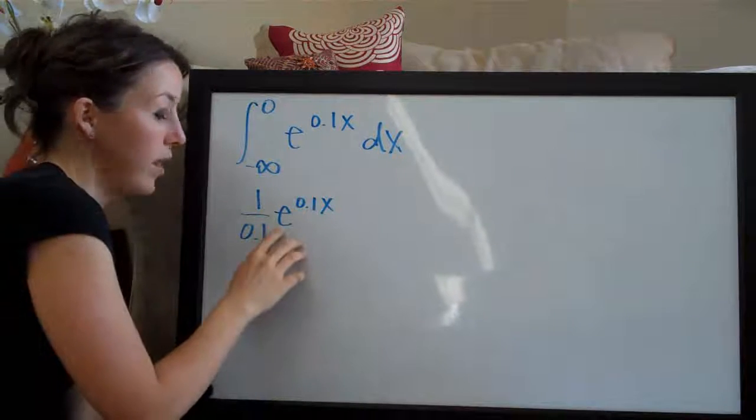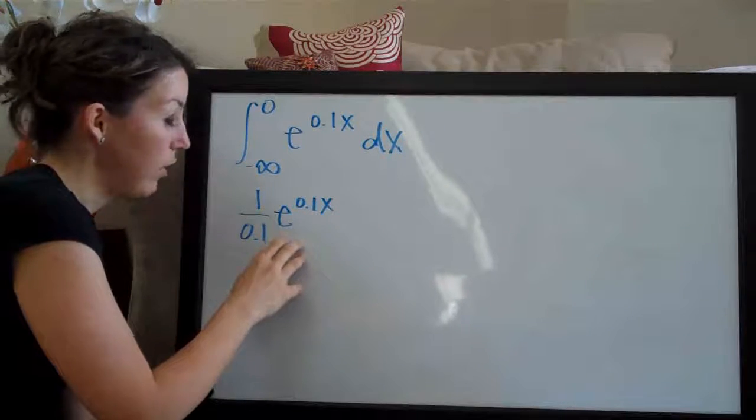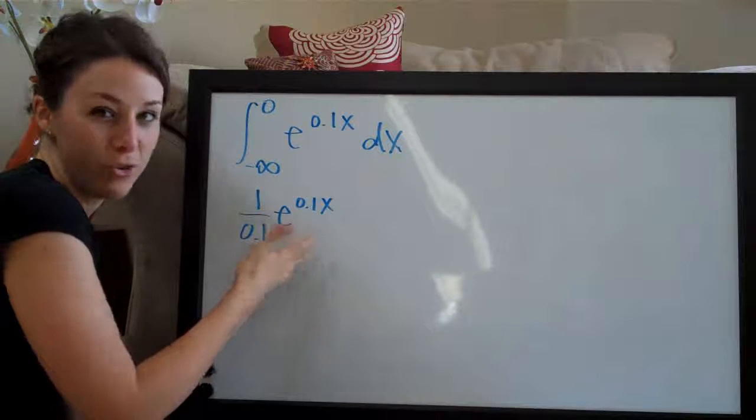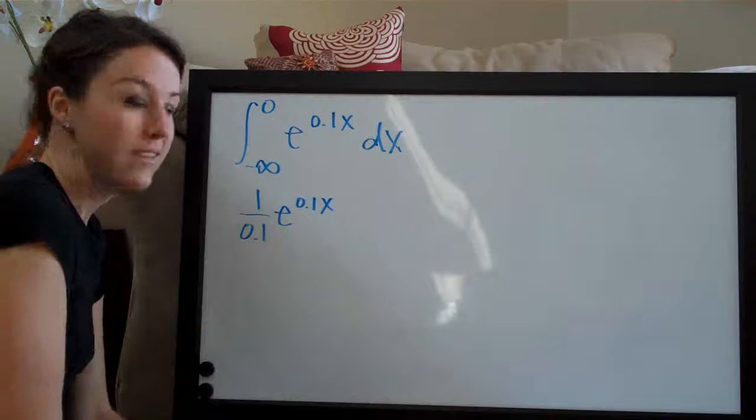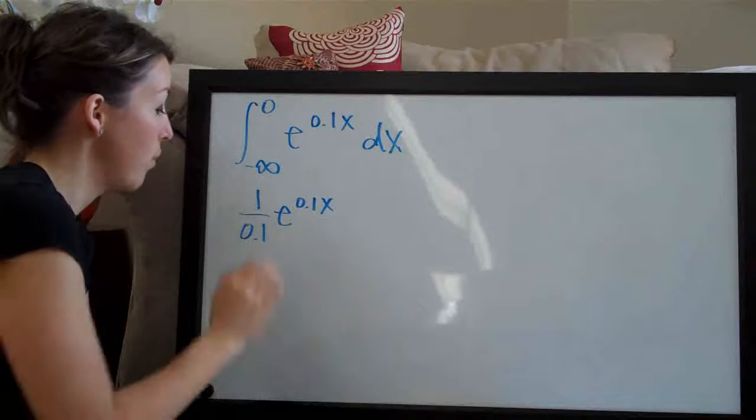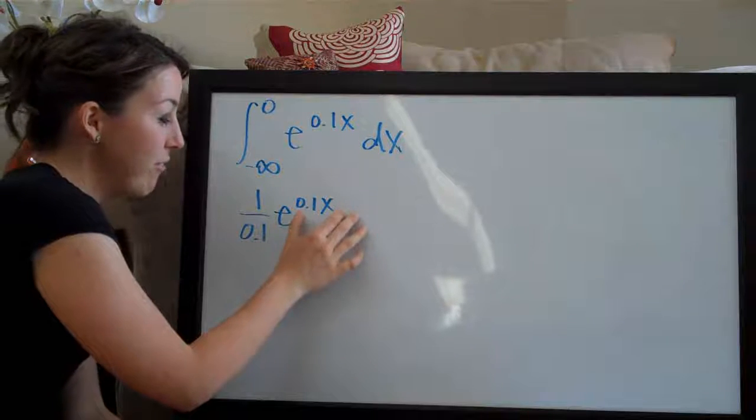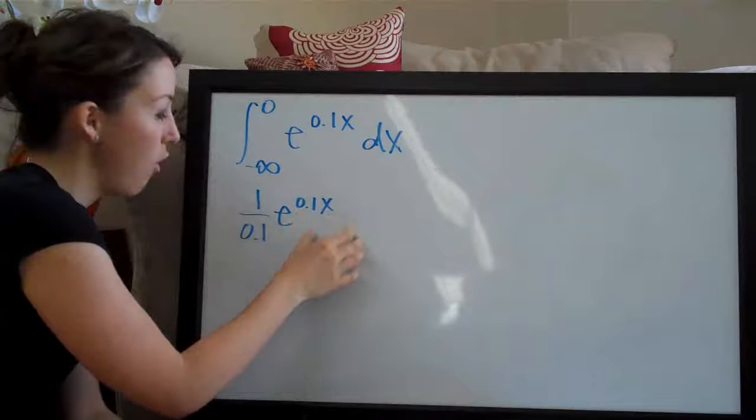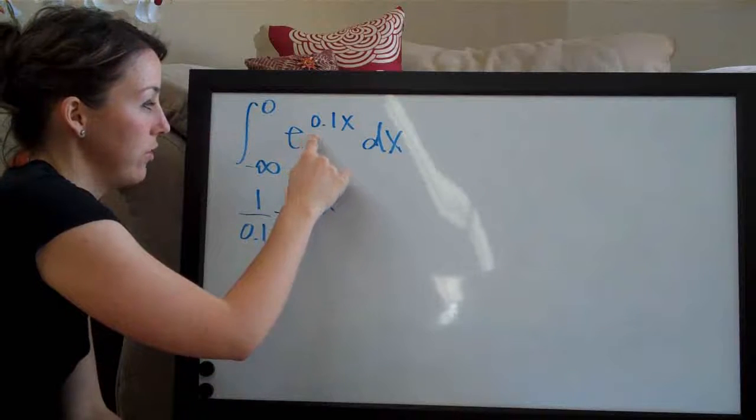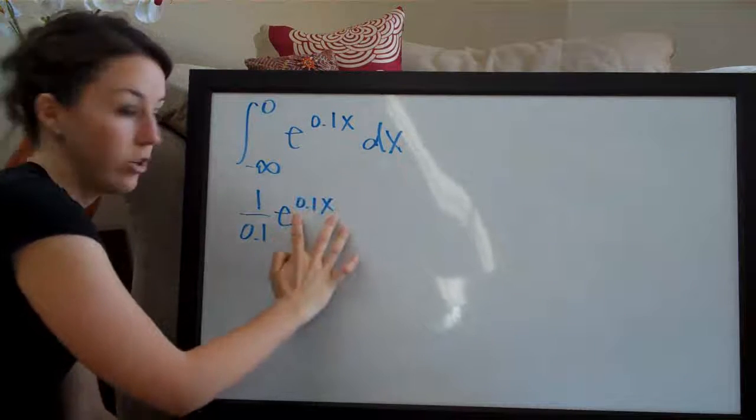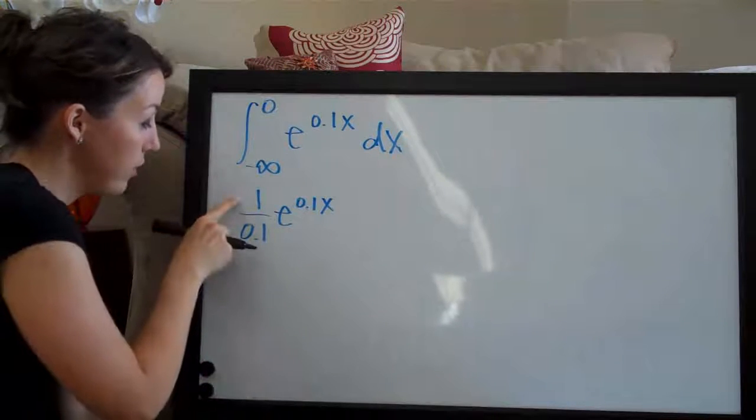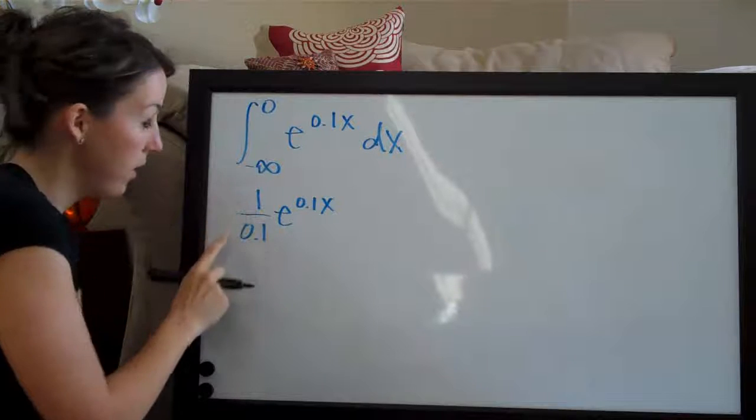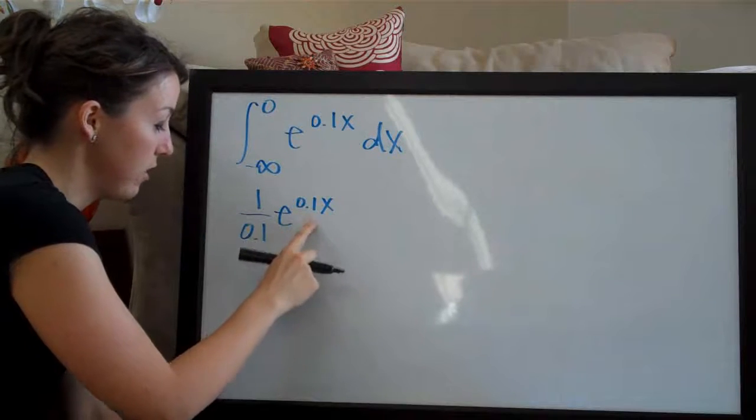So whenever you're taking an integral or a derivative that involves e, it's kind of a unique situation. When you take the integral, you never ever touch the exponent. It always stays the same. So 0.1x stays the same. And you just divide the coefficient, which is the implied one, by the coefficient here on the exponent.